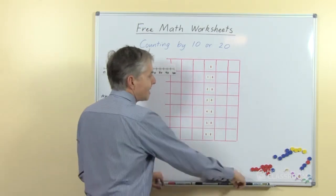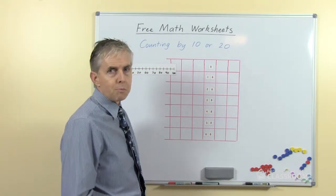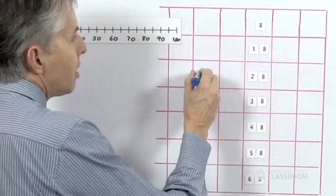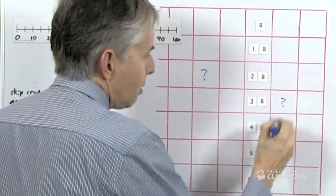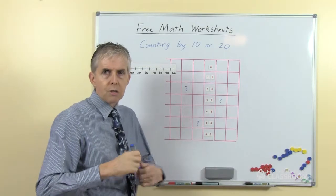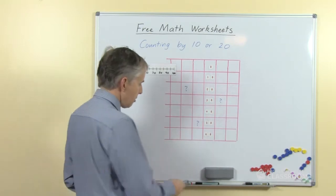To further extend this, we could ask the students about the numbers that are around this pattern. So if these are all the numbers that we have, we could say, what number is here? What number is there? And ask the students to think about the numbers in relation to each other on the 100 grid.